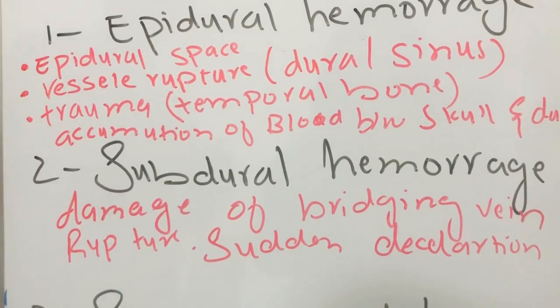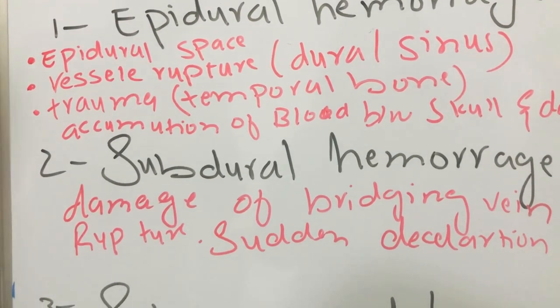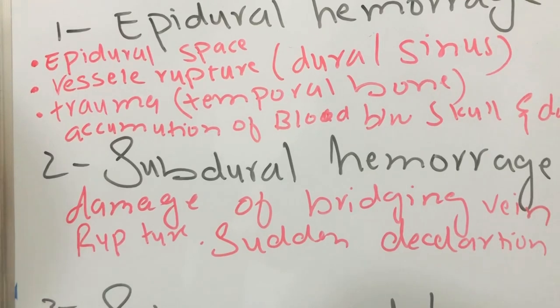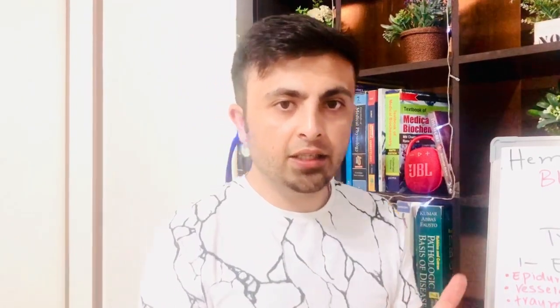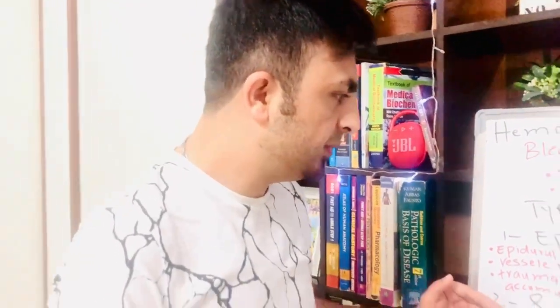Next is subdural hemorrhage. It is due to damage and rupture of the bridging veins caused by sudden deceleration. For example, if someone is traveling in a car and a sudden accident occurs, the brain remains in the same position but the skull moves toward the brain. This sudden deceleration causes injury known as subdural hemorrhage.